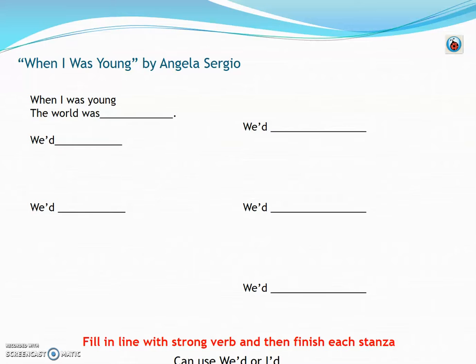Try to squeeze some figurative language in there, because that's what we were looking at when we read this poem — think about similes, metaphors, personification, and hyperboles. If you want to wait and add the figurative language after you've drafted the first version of the poem, that's perfectly fine. You can go back in and add some of those comparisons or exaggerations when you're finished.